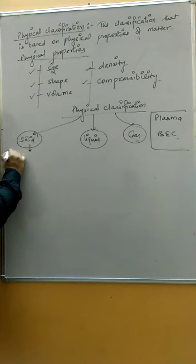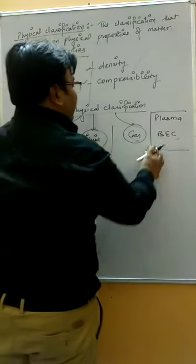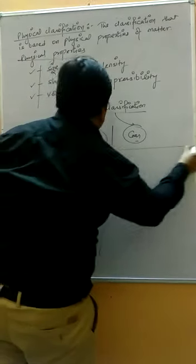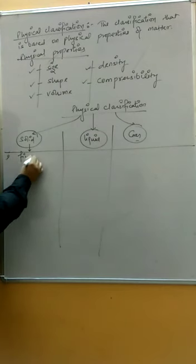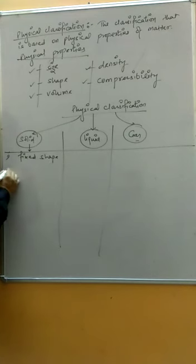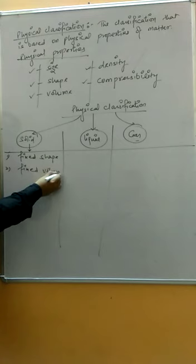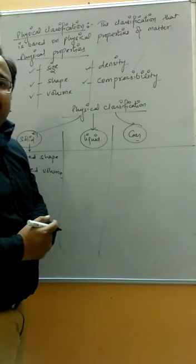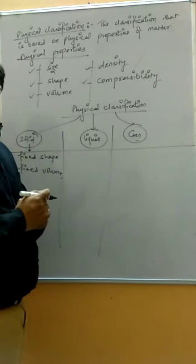What is solid? Solids always have a fixed shape and fixed volume. For example, if we take a brick, you can never change the shape of a brick without breaking it, and the volume of the brick is also fixed.